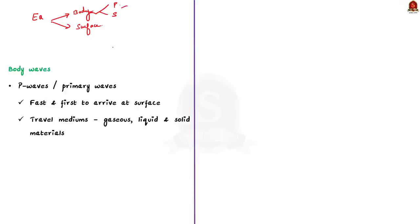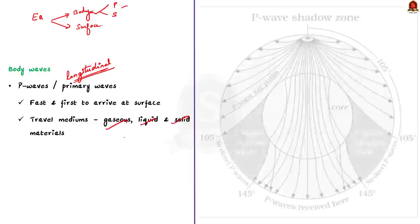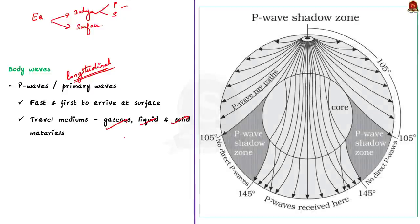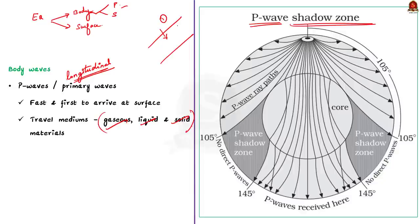P wave is a type of longitudinal wave. Just like sound waves, it can also travel through all three mediums — solid, liquid, and gas. This picture shows the shadow zone of P waves generated by an earthquake. Even though P waves travel through all three mediums, the velocity and direction of the wave changes if there is a medium change. From the picture, we can notice a shadow zone that does not receive any P waves.